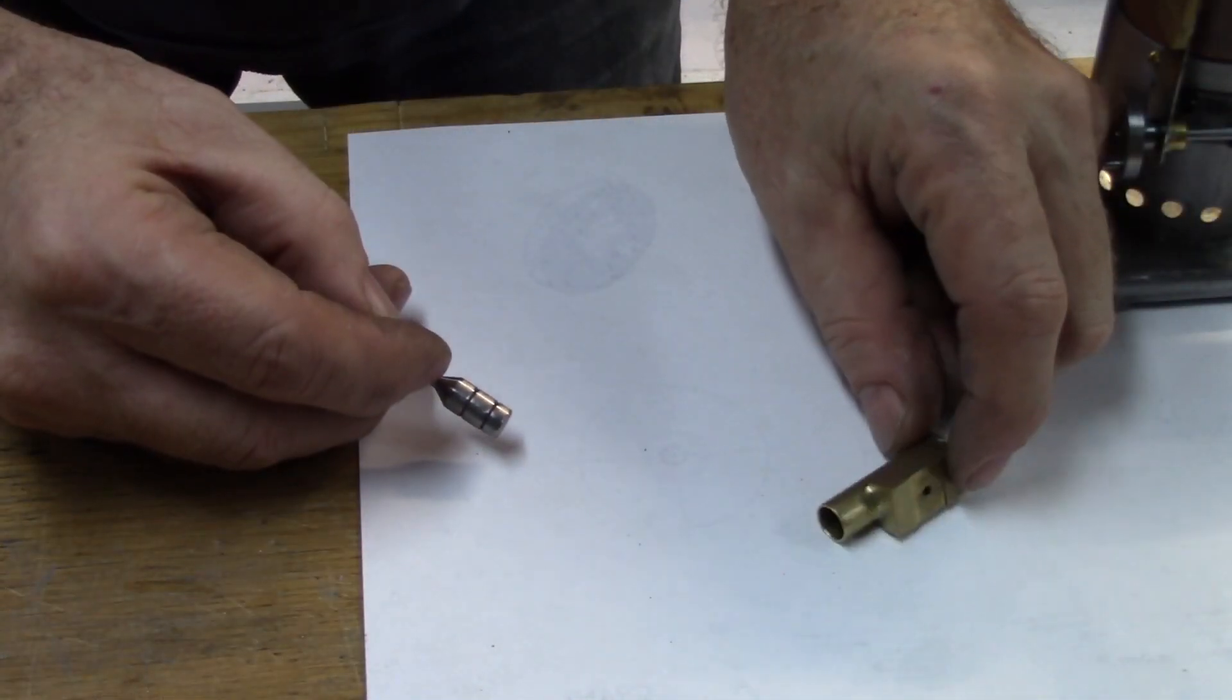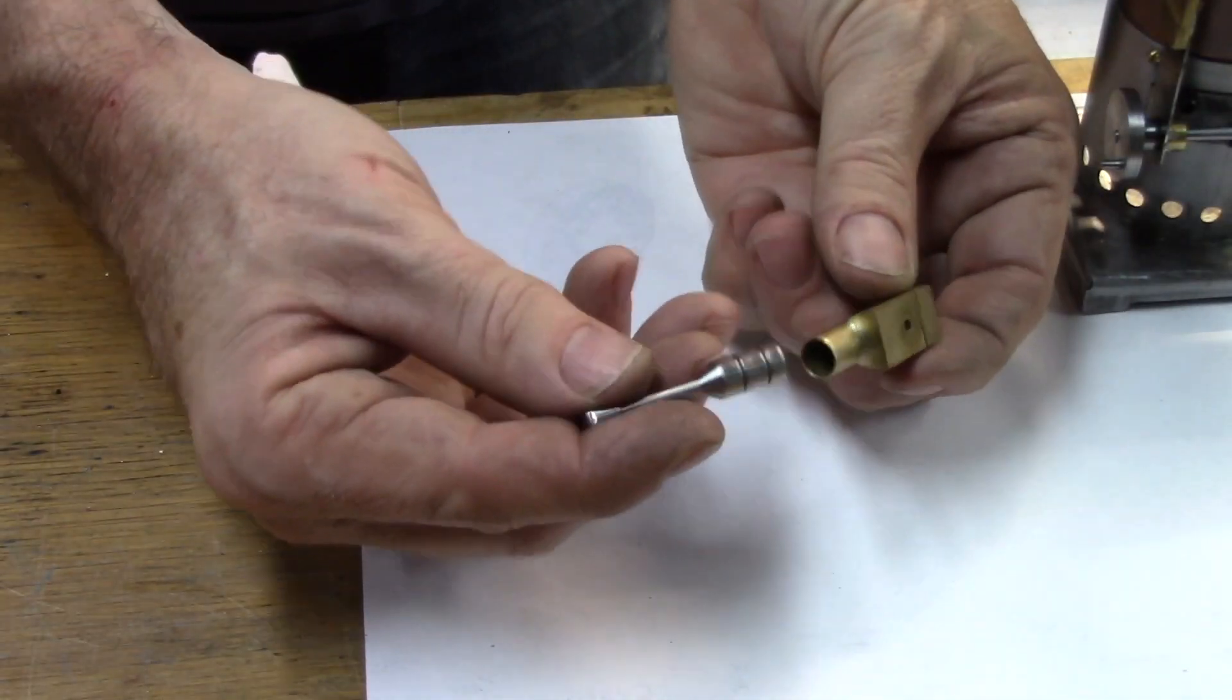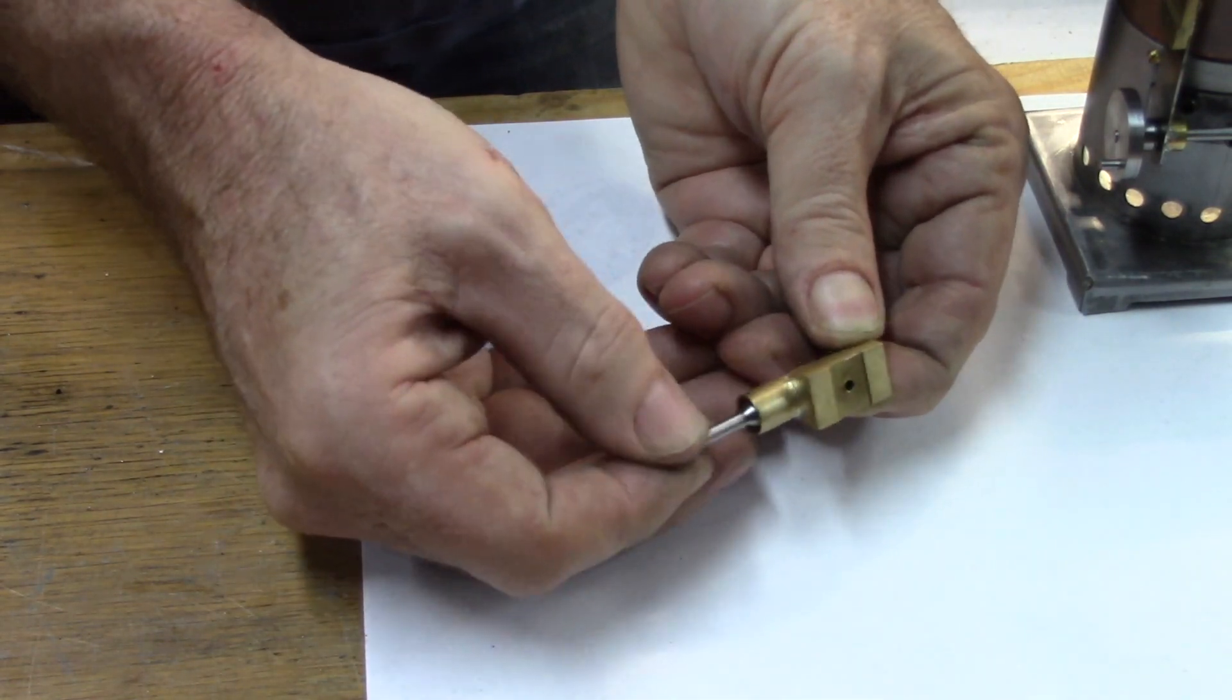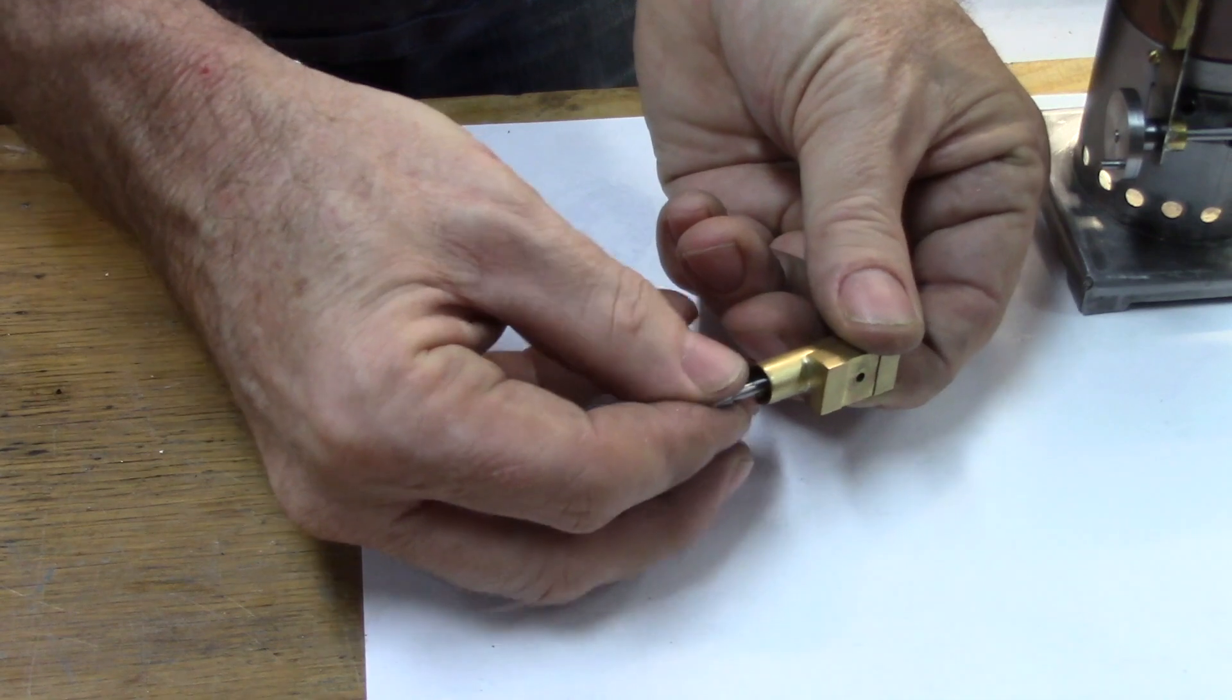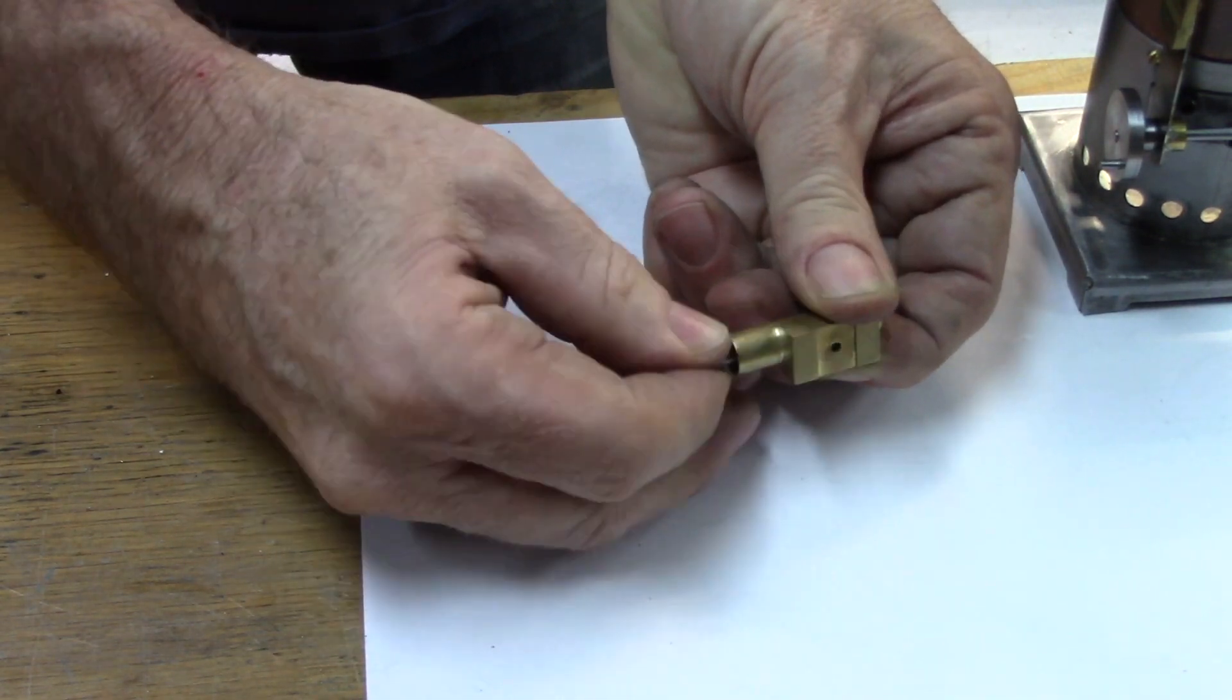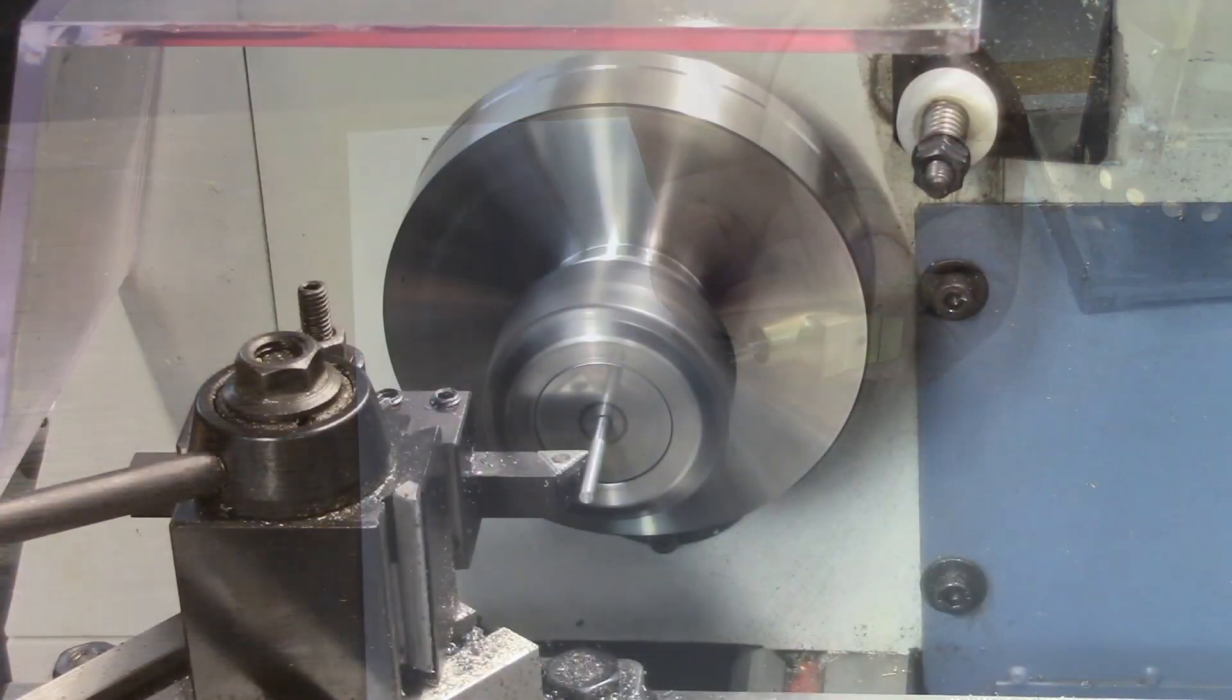The fit of the piston is tested in the cylinder. In this case it is tight. Applying some force will cause air to blow past the piston, but this will be taken up when the cylinder is at operating temperature. If it is a little too tight, then the piston and the cylinder can be lapped together using Brasso.